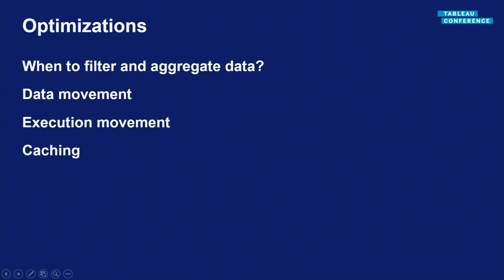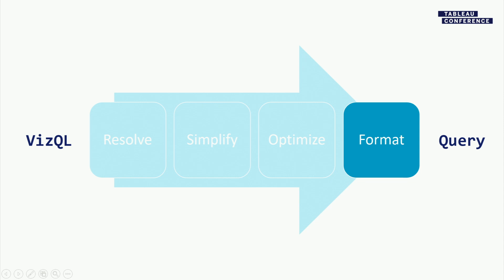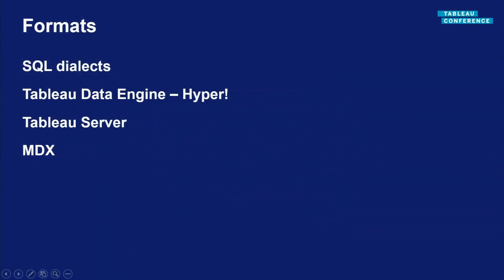The fourth step is formatting: understanding the kind of SQL these data sources support. There's really no such thing as standard SQL in practice — there's a standard, but not everyone implements it, and many implement nonstandard things that are actually really useful. Taking advantage of functionality in all these data sources is very important for performance. The data source we care most about is our data engine — today that's Hyper. Until Hyper was available in version 10.5, we had the previous data engine with its own query language called Tableau Query Language. Hyper speaks a very common form of SQL, which is nice.